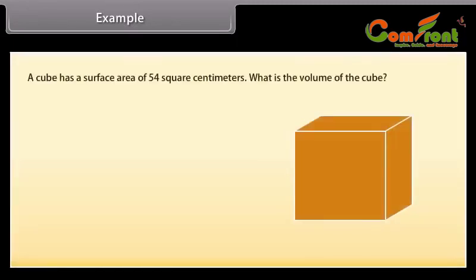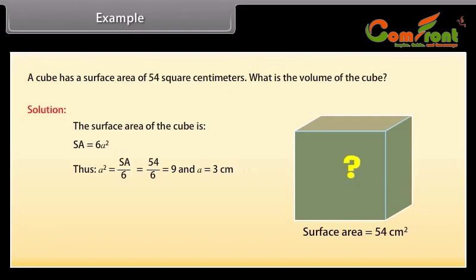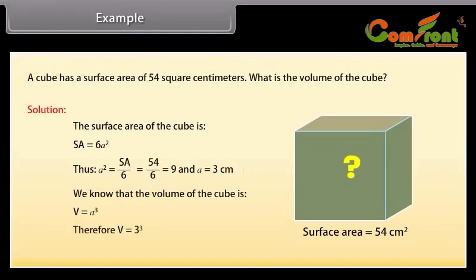Let us now solve an example to find the volume of a cube. A cube has a surface area of 54 square centimeters. What is its volume? The surface area of a cube is SA = 6A², so A² = SA/6 = 54/6 = 9, giving A = 3 cm. Therefore, V = A³ = 3³ = 27 cm³.